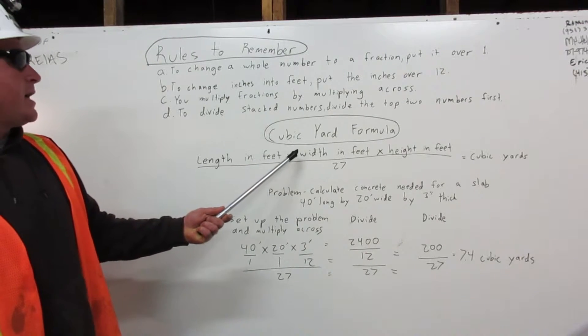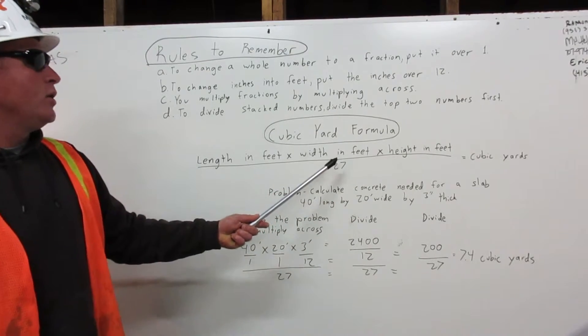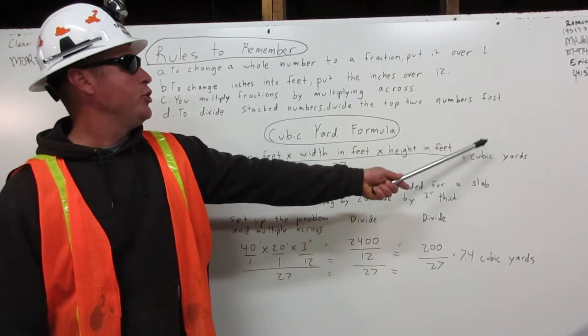Length in feet times width in feet times height in feet over 27 equals, will give you your cubic yards.